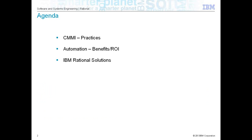This is the brief agenda for today's discussion. We're going to discuss CMMI and the process areas, the categories and the practices. Then we'll understand how to automate these process areas using the IBM Rational portfolio and set of solutions, and finally get introduced to the IBM Rational set of solutions. This is the agenda for the next 45 to 50 minutes.